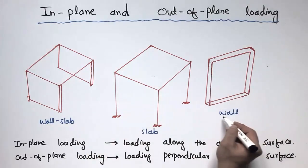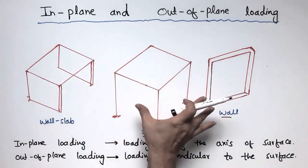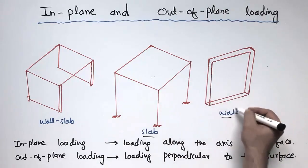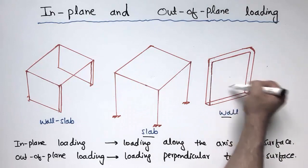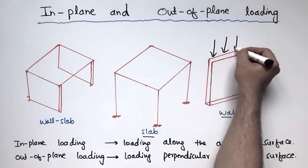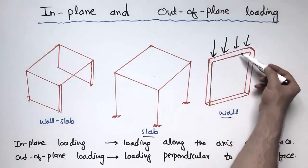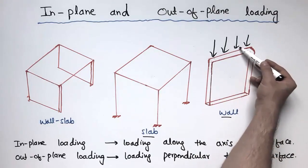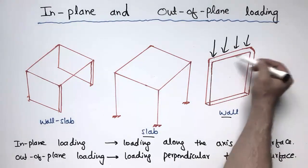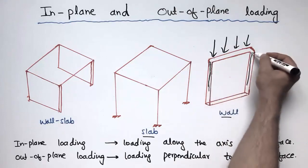Now consider the wall. This is the wall surface and these are the sides of the wall. With the help of these three figures I will explain the difference between in-plane and out-of-plane loading. The vertical loading acting on this wall is along the axis of the wall — this may be the Y-axis — and the load is also acting along the axis of the wall, so we call this type of loading in-plane loading.